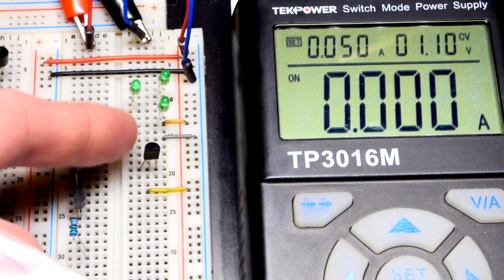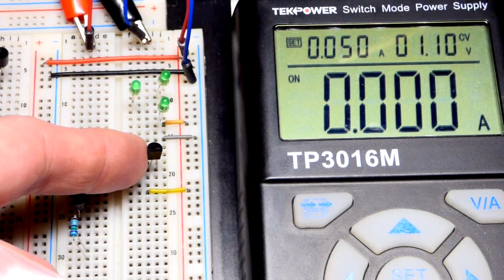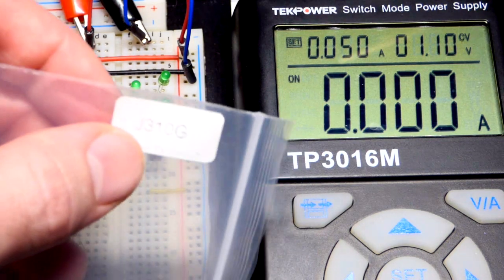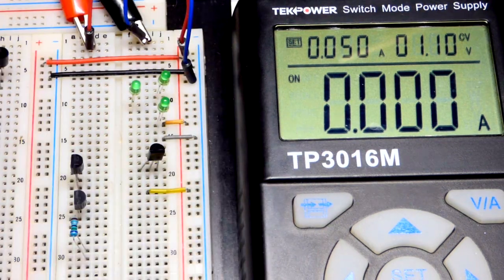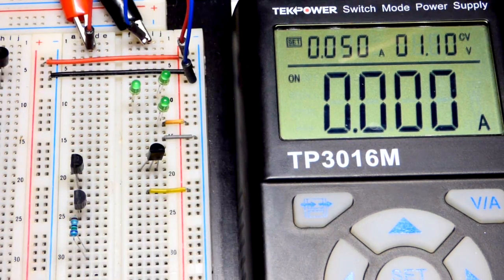So now in this video, we're going to look at one of the properties of the JFET transistor. This is the J310, an N-channel MOSFET.